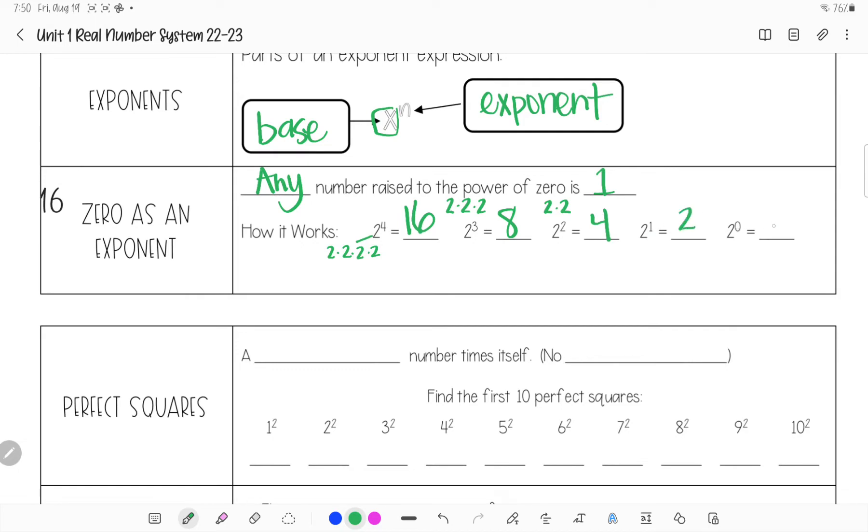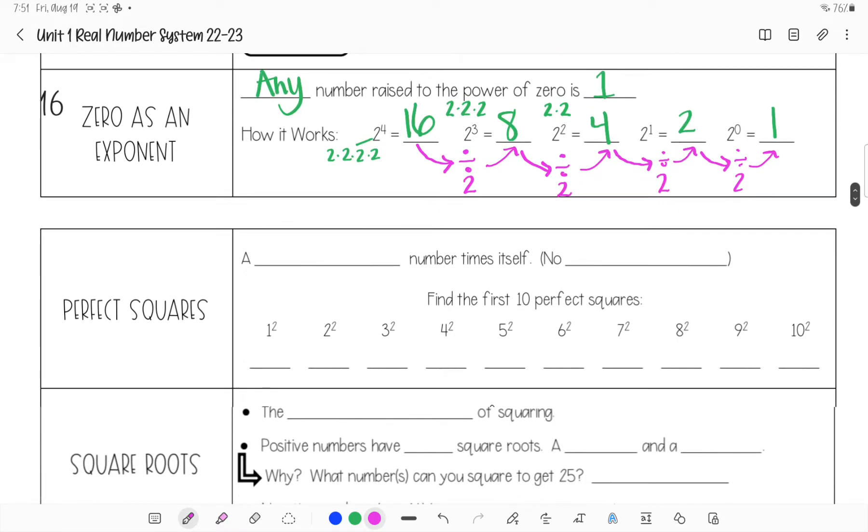And I just told you anything to the power of 0 is 1. But let's see why that is. If we start here, to get from 16 to 8, we divided by 2. 16 divided by 2 gave me 8. To get from 8, so we are moving this way. To get from 8, if we divide by 2, we would get 4. If we took 4 and divided by 2, we would get 2. And if we took 2 and divided by 2, we would get 1. And this will work for anything we did. So if it was 3 times 3 times 3 instead, we would divide by 3 down here. And we would still end up with 1. So that's why that works the way it does. That's why anything to the power of 0 is 1.